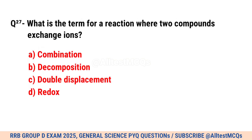Question No. 27. What is the term for a reaction where two compounds exchange ions? Correct option is C. Double displacement.